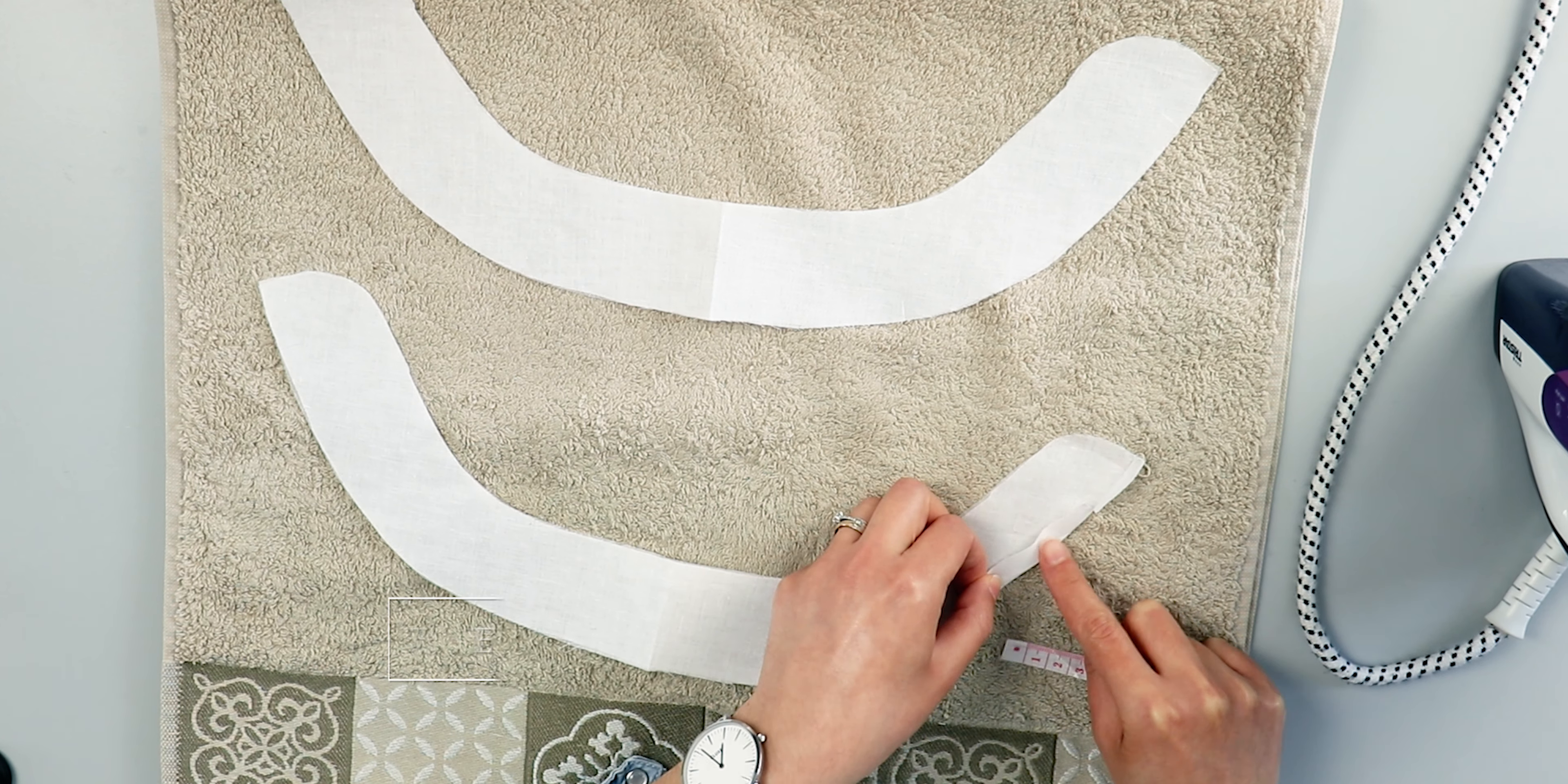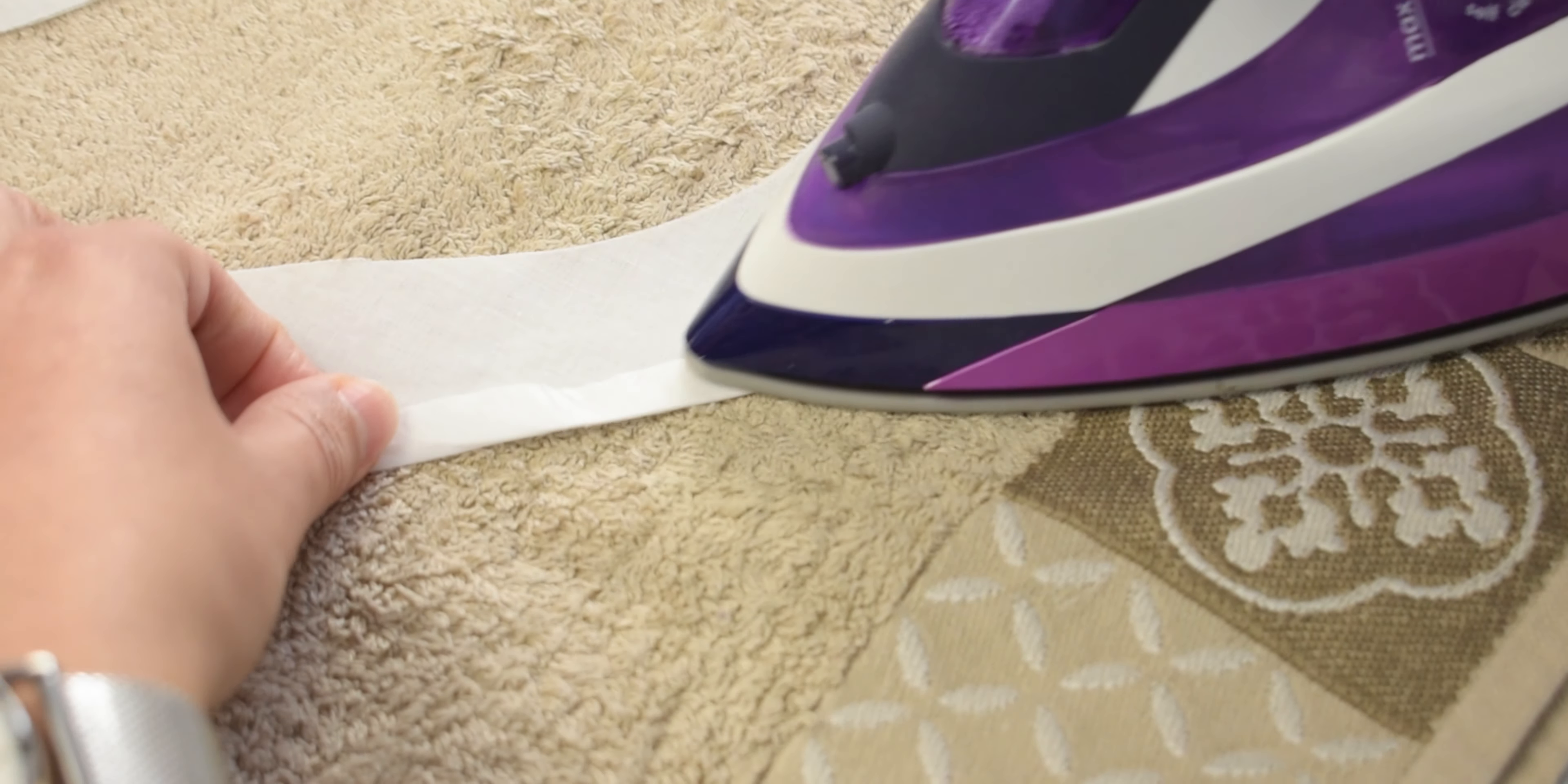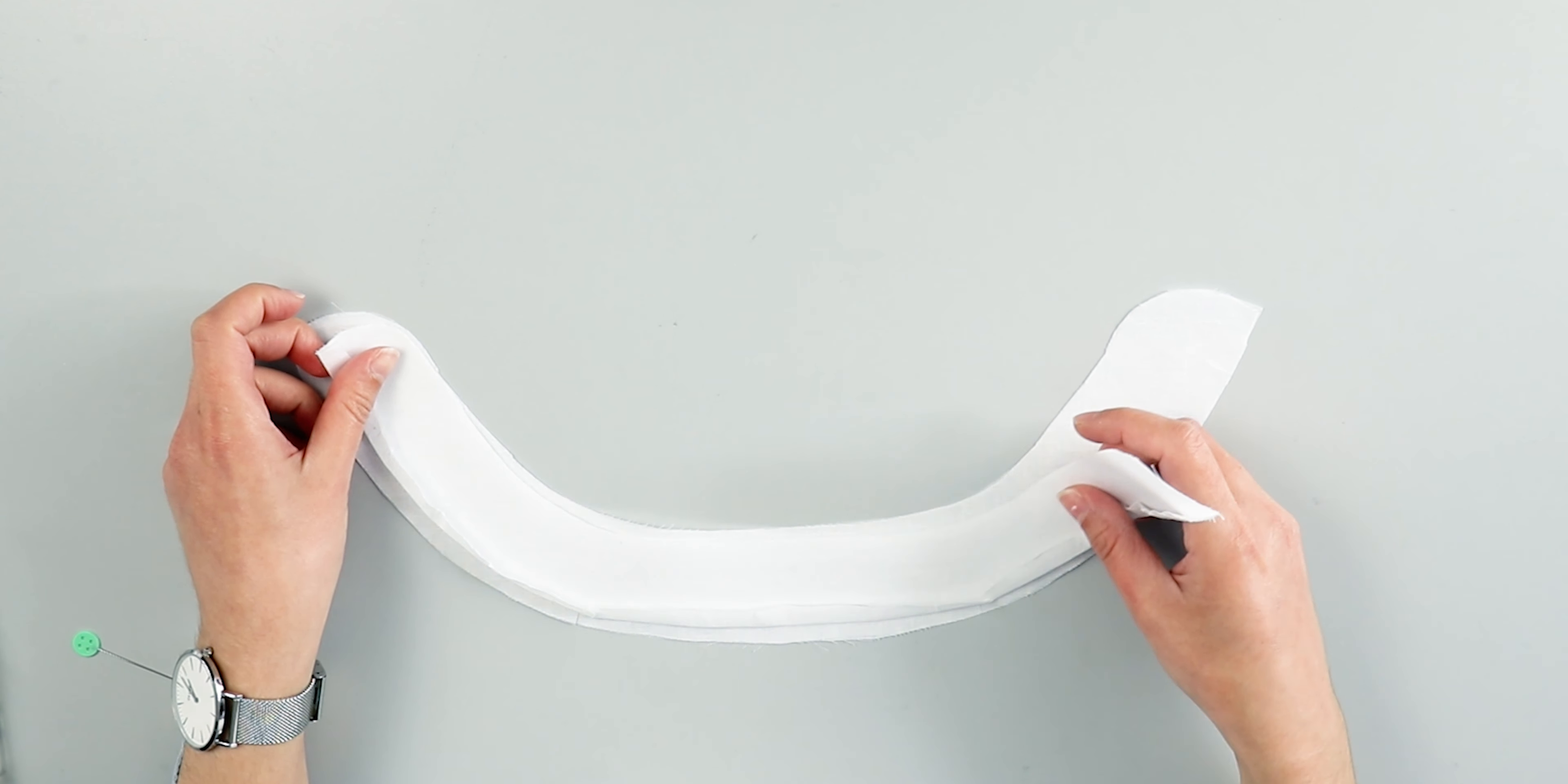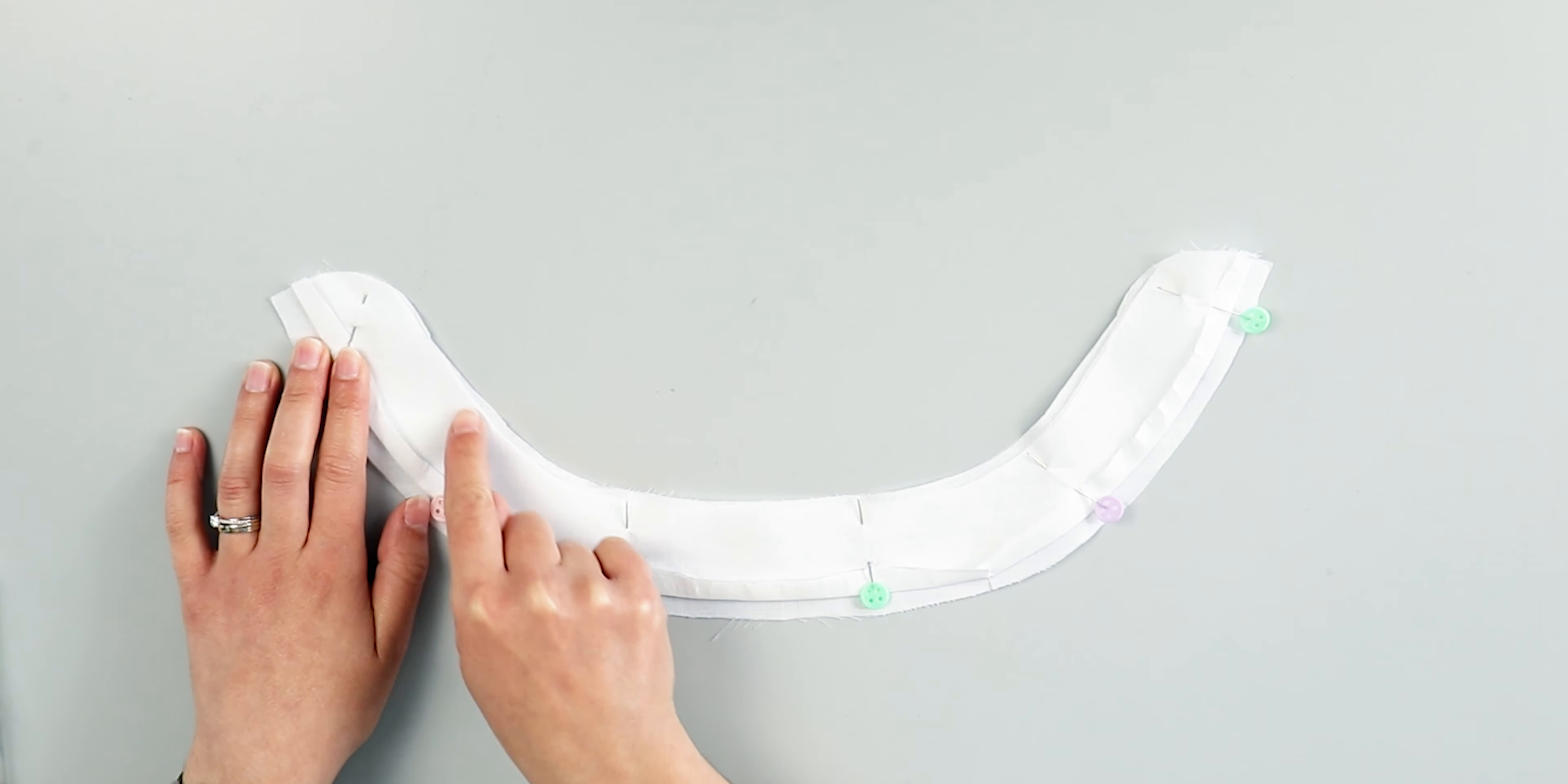Now, we need to move onto the collar part. Iron the bottom of one of the collar pieces by 1cm towards the wrong side. Take it easy on this step, because it's not as simple as it looks to get right. Then, I place that collar piece on top of the other one, making sure that the right sides were facing each other. Pin and sew the collars along this edge.